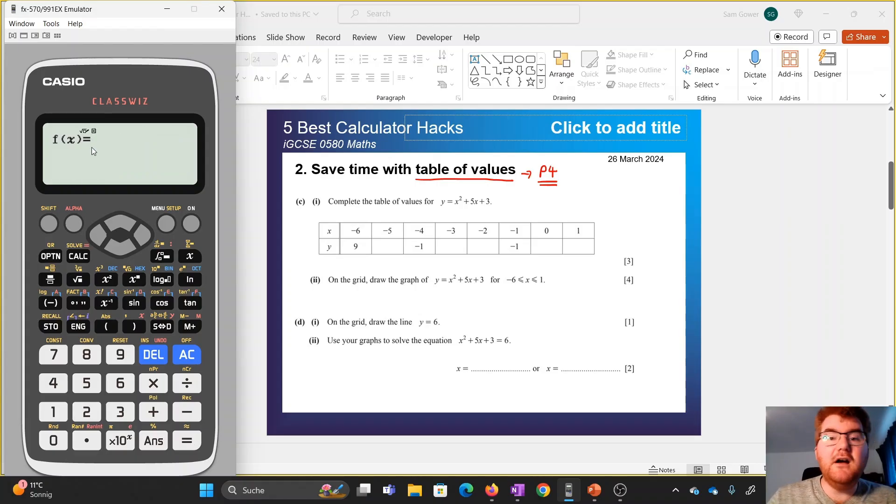Now we're going to type in our function, so we're going to type in x squared plus 5x plus 3. Notice there's an x button. You can also use alpha x as well. So we have x squared plus 5x plus 3. Press equals. G of x we leave alone. Now it's going to ask us for our table range here. Notice we're going from minus 6 to 1, so I'm going to type in minus 6 to 1. Now it asks us for the step, so this means how much are we going up in here. Notice we're going up in 1s, minus 6 to minus 5 to minus 4.